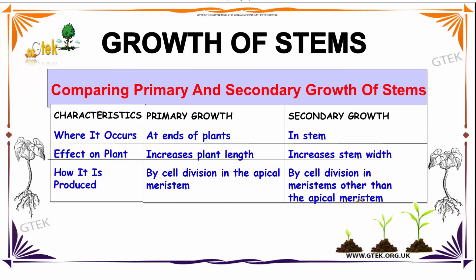Now we are going to see about Growth of Stems. There are two characteristics: Primary Growth and Secondary Growth. Primary Growth starts at the end of the plant and increases plant length. Secondary Growth starts in the stem and increases stem width. Primary Growth occurs by cell division in the Apical Meristems, whereas Secondary Growth occurs by cell division in meristems other than the Apical Meristems.